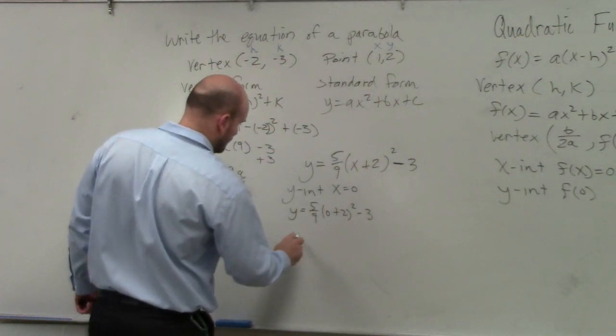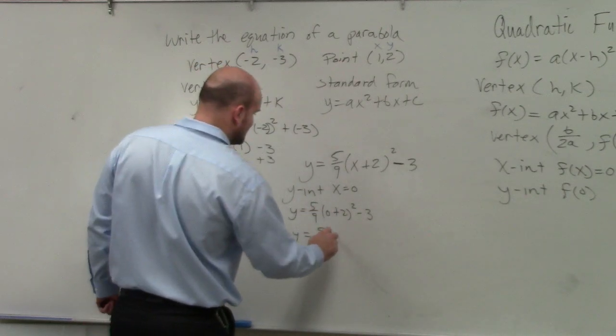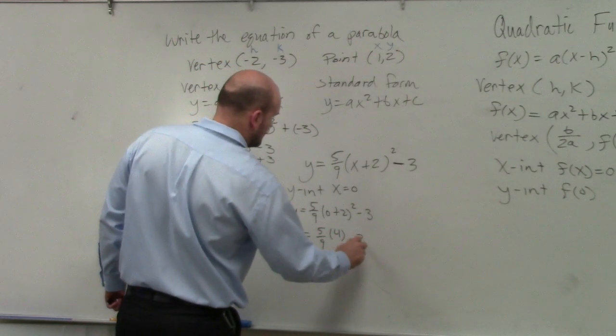So we end up getting y equals 5 ninths. 2 squared is going to be times 4 minus 3.